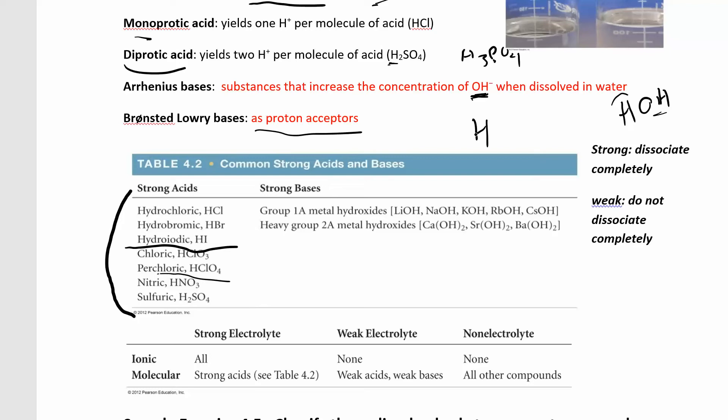And again, sometimes you'll have carboxylic acids. The carboxylic acid has this COOH group at the end of it. So you might have something like CH3COOH. This is a carboxylic acid.